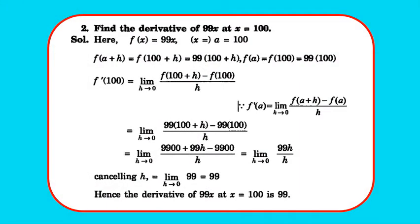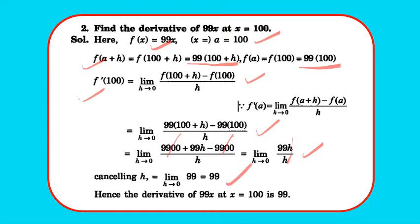Question 2: find the derivative of 99x at x = 100. Here f(x) = 99x, a = 100. So f(100+h) = 99(100+h) and f(100) = 99×100. Applying the first principle: limit h→0 of [99(100+h) - 99×100] / h = limit h→0 of 99h/h = 99. So the derivative of 99x at x = 100 is 99.